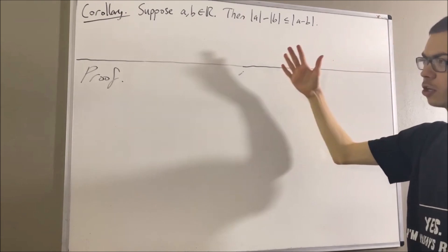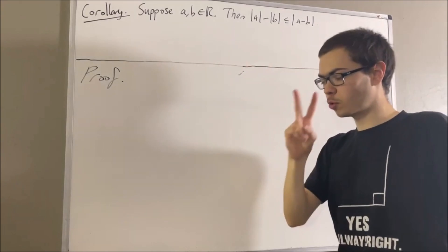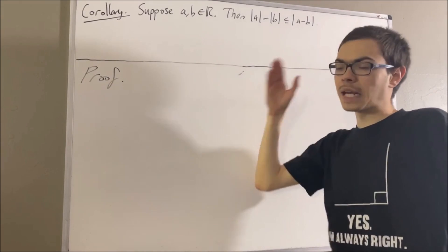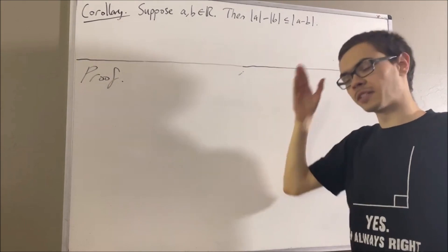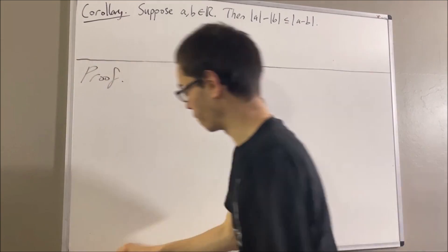Now, if you recall, the triangle inequality says for every two real numbers A and B, the absolute value of A plus B is less than or equal to the absolute value of A plus the absolute value of B.